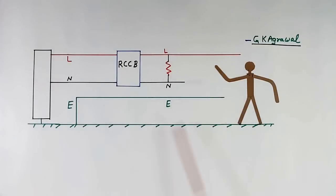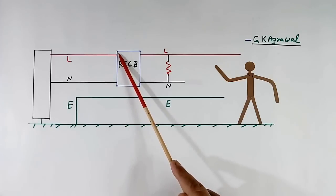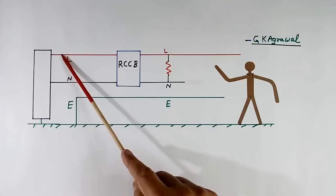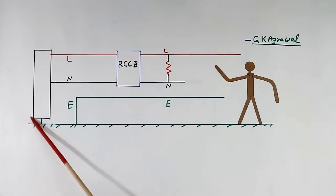Here I have shown one simple circuit. This is line wire of AC supply. This is neutral wire of AC supply. These two wires are coming from substation. This is substation.